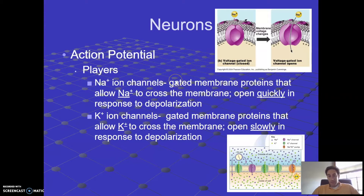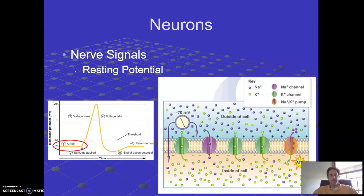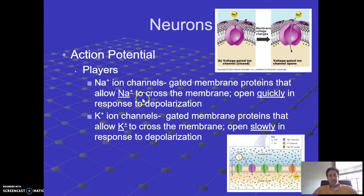Gated means just like a gate on a fence. Sodium ion channels are gated membrane proteins that allow sodium to cross the membrane, and they open quickly in response to depolarization. Depolarization simply means that the membrane potential gets slightly more positive — if this value, minus 70, goes up, we say it is depolarized. Potassium ion channels are gated membrane proteins that allow potassium to cross the membrane, and they open slowly in response to depolarization.